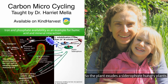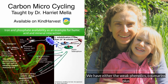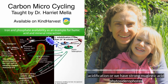So the plant exudes siderophores — a hungry plant. We have either the weak phenolics, coumarins, plus acidification, or we have the strong mugineic acid — phytosiderophores.